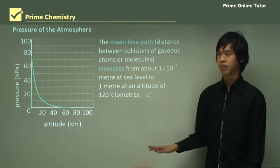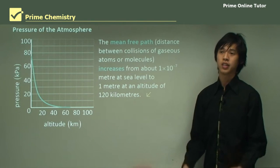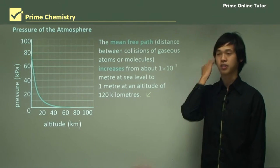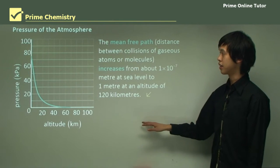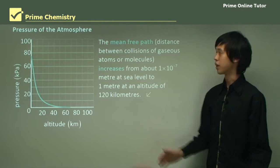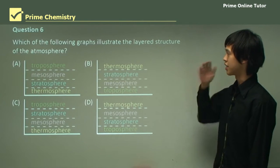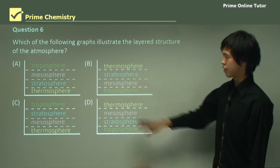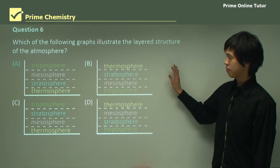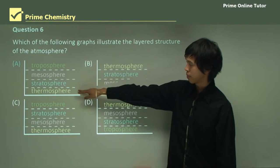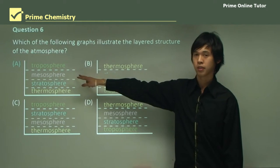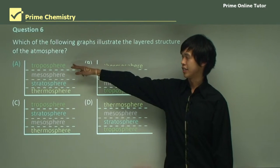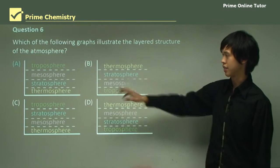This wraps up the theory of the structure of the atmosphere and how each layer interacts with us and with each other. Now for question six: which of the following graphs illustrates the layered structure of the atmosphere? Looking at option A — troposphere at the top and thermosphere at the bottom — this is wrong because the troposphere is actually at the bottom and the thermosphere is at the top.